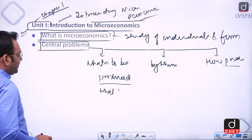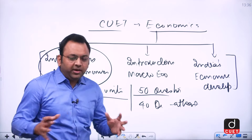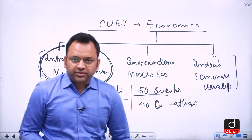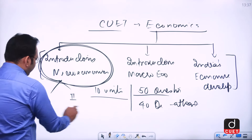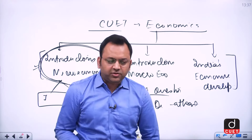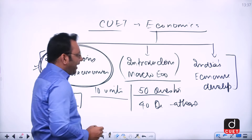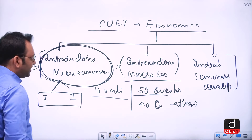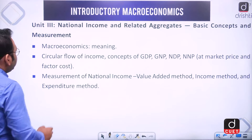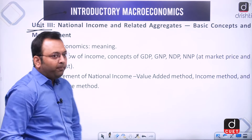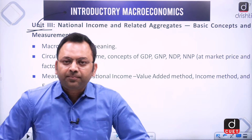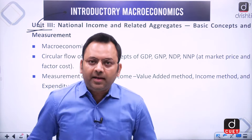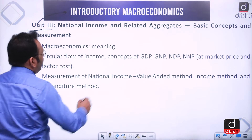Units one and two cover introductory microeconomics. The third unit covers introductory macroeconomics — the study of production, consumption, and resources at the level of a nation. Micro means study at the individual or firm level; macro means study at the country or broader level.